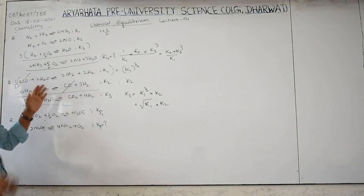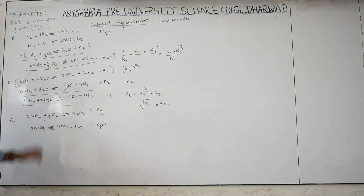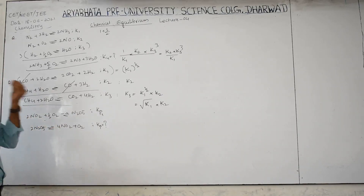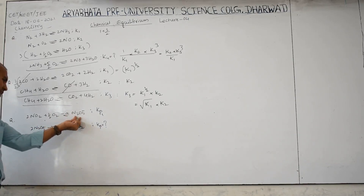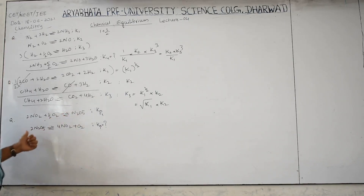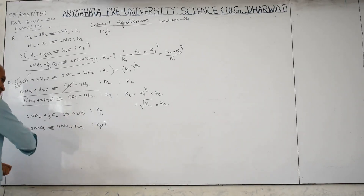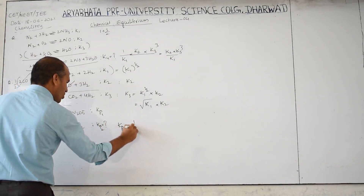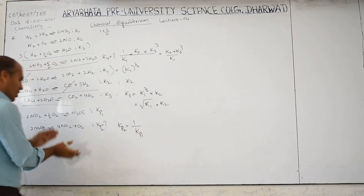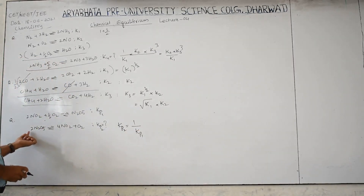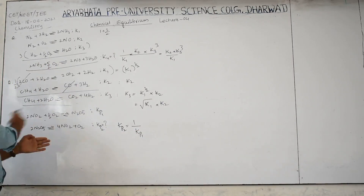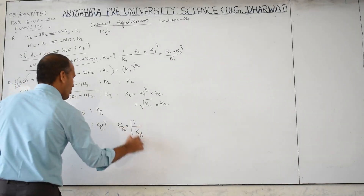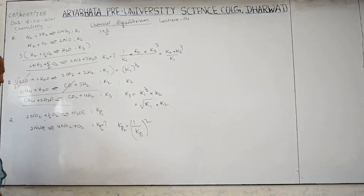Now consider this equation: 2NO₂ + ½O₂ → N₂O₅, given as KP₁. Here N₂O₅ is on the right side in one equation and on the left side in another, with 1 mole versus 2 moles. So the equation is first reversed — giving 1/K — and then multiplied by 2 because of the mole difference. Therefore the answer is (1/KP₁)² — that is, KP₁ raised to the whole power of 2 after reversal.